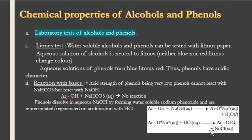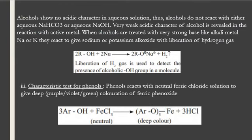The very weak acidic character of alcohols is revealed in the reaction with active metals. Alcohols react with active metals like sodium to form sodium alkoxide along with hydrogen gas. By this reaction we can detect whether a compound contains an OH or alcoholic group.